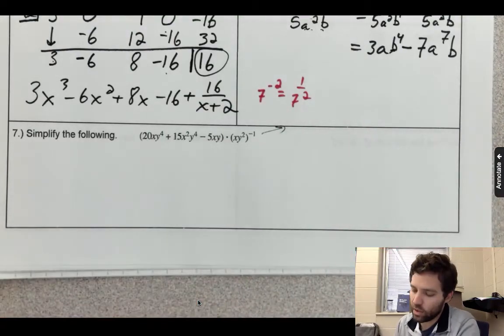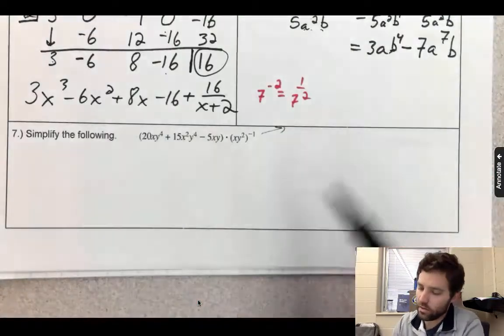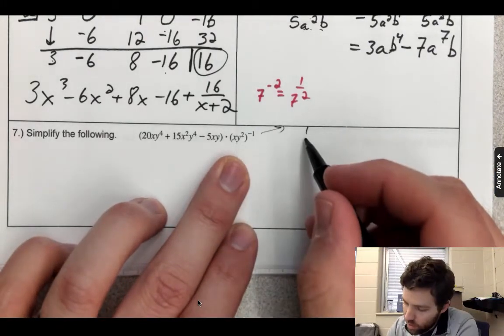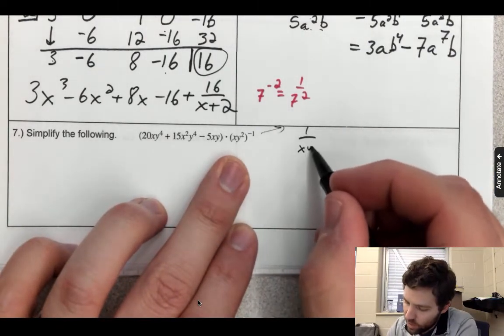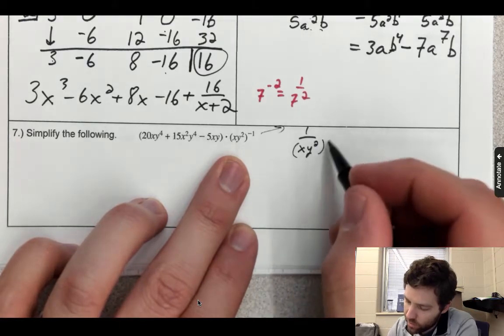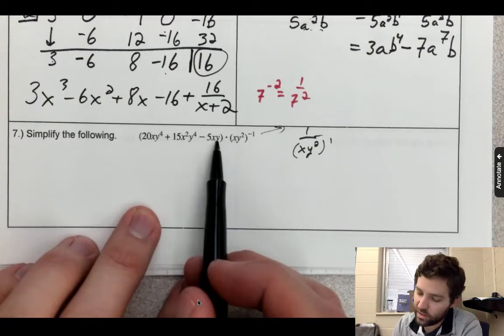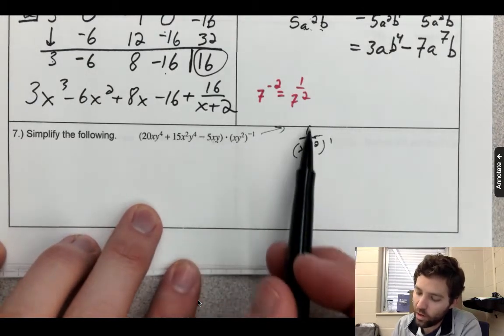So here when I have this to the negative one, that means one over xy² to the positive one. Multiplying by one over xy² is the same as dividing by that.